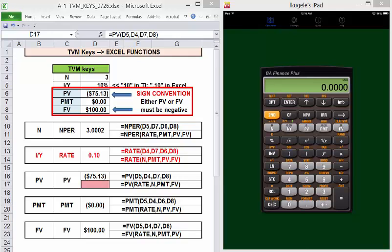The sign convention applies to payment as well. Think of a cash flow relative to you. If the money's coming into you, it's positive. If it's going out from you, it's negative. I'm only going to go through one example of the functions and the keys since all of them follow the same pattern. Enter four variables, solve for the fifth.